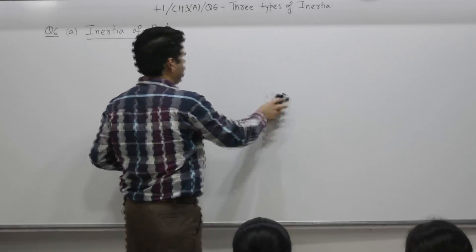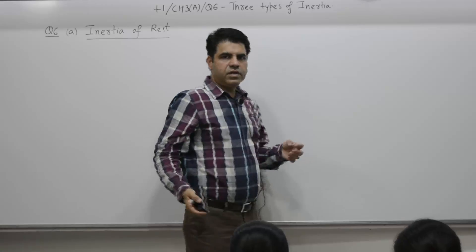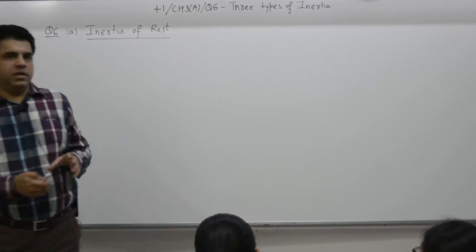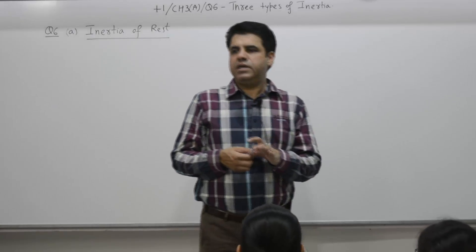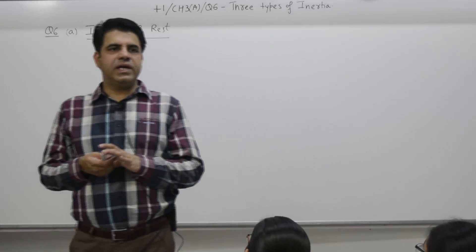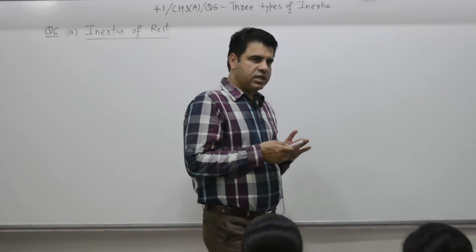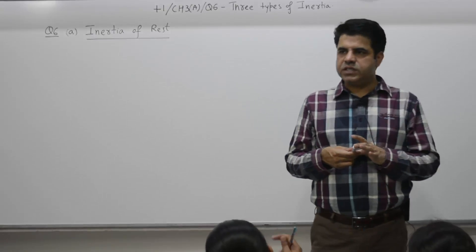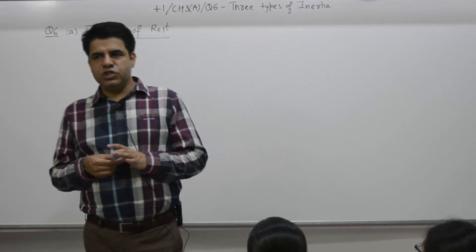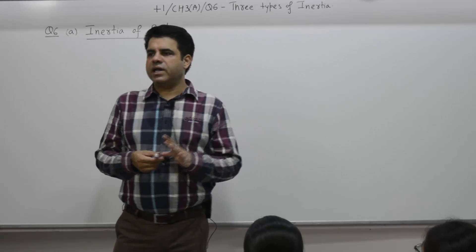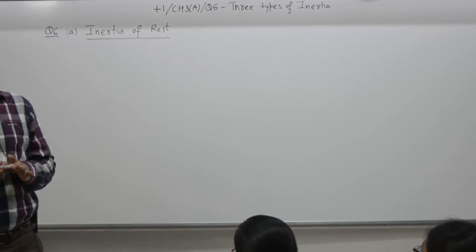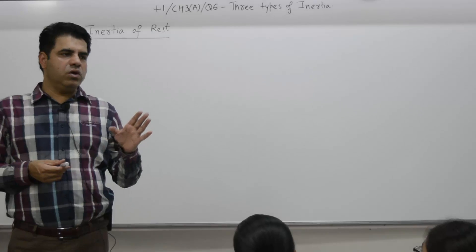There are three types of inertia: inertia of rest, inertia of motion, and inertia of direction. Inertia of rest means the object will have a tendency to be at rest. Inertia of motion means the tendency of the object is to continue to be in a state of motion. And inertia of direction means an object will have a tendency to continue to move in a particular direction — whatever direction a particle is moving, it will have a tendency to move along that direction only.